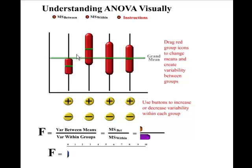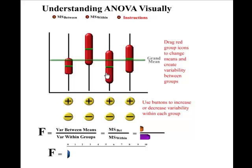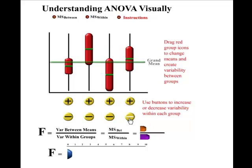So as you move the mean of a group away from the grand mean, the F-statistic gets larger. And when you decrease the variance within a group, the F-statistic also gets larger.